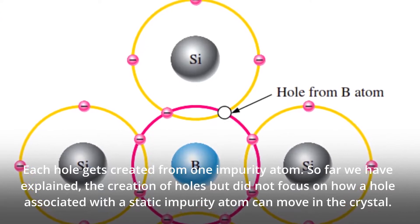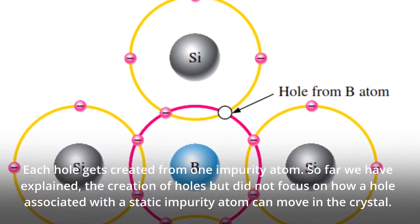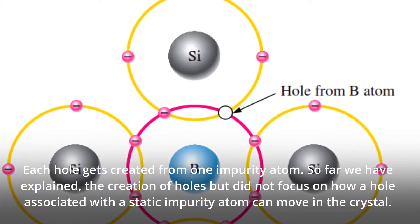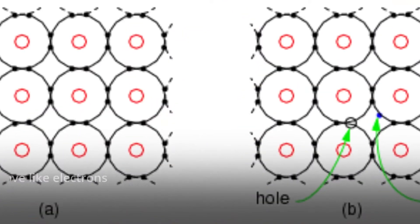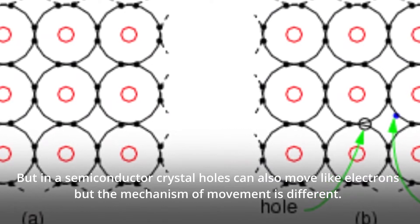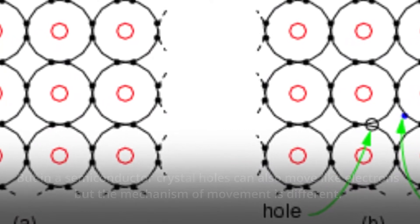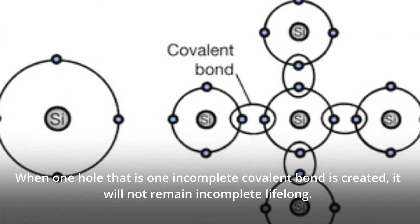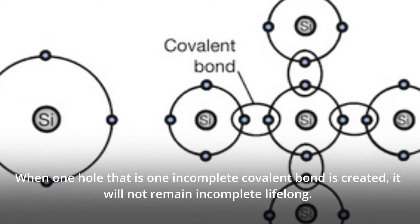So far we have explained the creation of holes but did not focus on how a hole associated with a static impurity atom can move in the crystal. But in a semiconductor crystal holes can also move like electrons but the mechanism of movement is different. When one hole, that is one incomplete covalent bond is created, it will not remain incomplete lifelong.